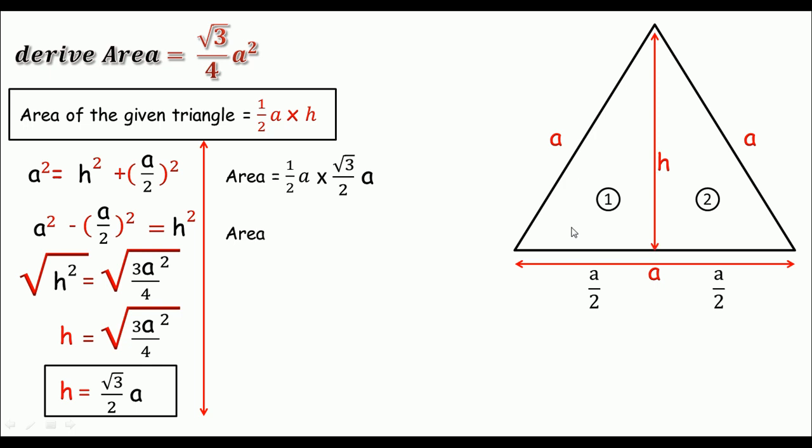We'll get the area equals square root 3 divided by 2 times 2 is 4 and a times a is a squared. So we got area equals square root 3 divided by 4 times a squared.